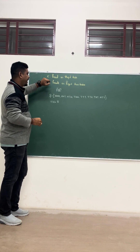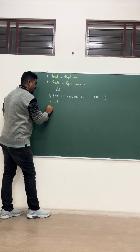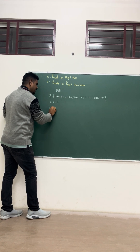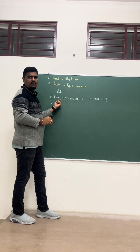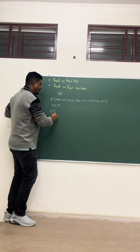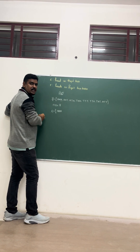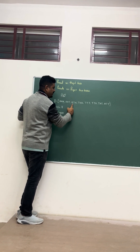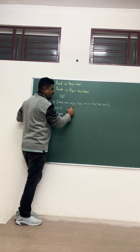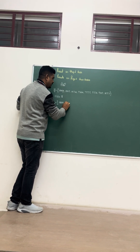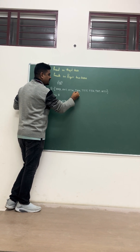Now, Event E: head on the second toss. That means we need head on the second toss. So from the sample space, we can take: H, H, H — head on second toss. Next, H, H, T — head on second toss. We cannot take outcomes where the second toss is tail. So from Event E: tail, head, head and tail, head, tail also qualify.